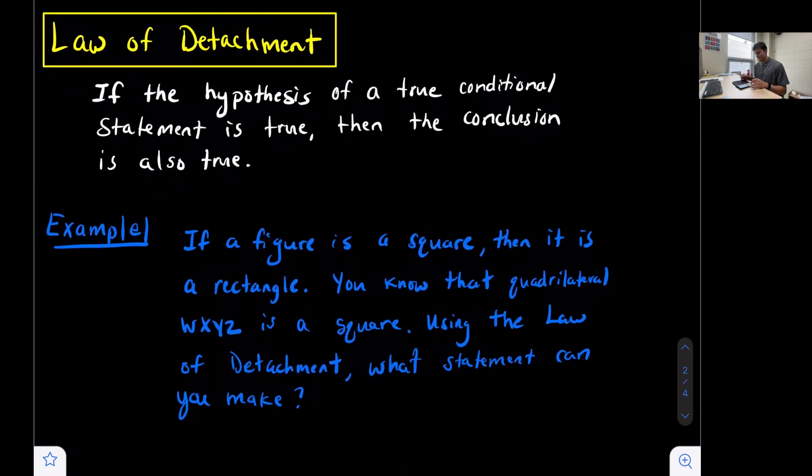The first is called the law of detachment. The law of detachment states that if the hypothesis of a true conditional statement is true, then the conclusion is also true.